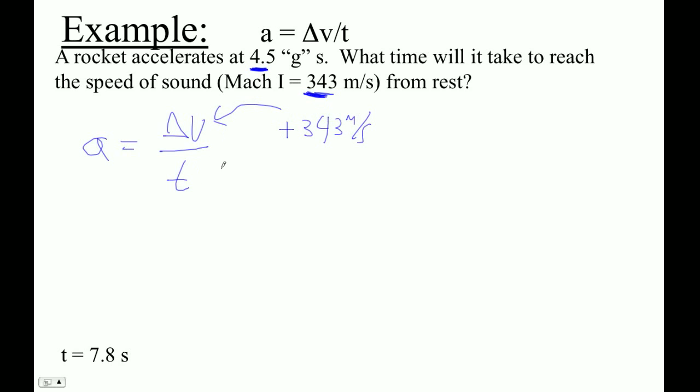This is what I'm trying to find. And then 4.5 Gs, what do we mean by that? Well, 1 G in IB land is 9.81 meters per second squared. So 4.5 Gs is 4.5 times 9.81, so I need a calculator.